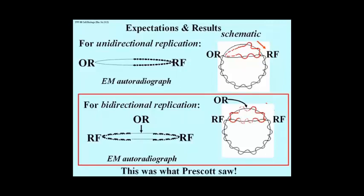Prescott saw images very like the illustration for bidirectional replication. Now, these techniques allowed us to confirm semi-conservative replication. So think about how you would make that explanation.